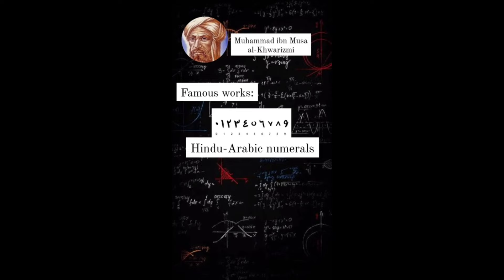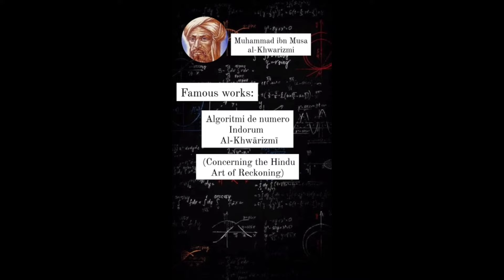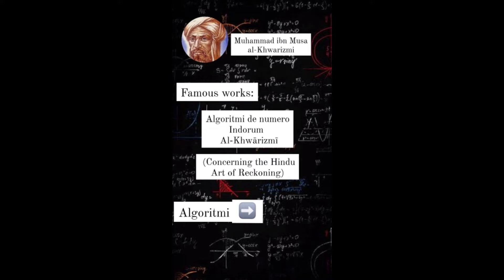In his second work, he introduced Hindu-Arabic numerals. This work was Algorithmi de Numero Indorum, or Al-Khwarizmi Concerning the Hindu Art of Reckoning. The term algorithm was derived from his name as a result of translation in Latin.